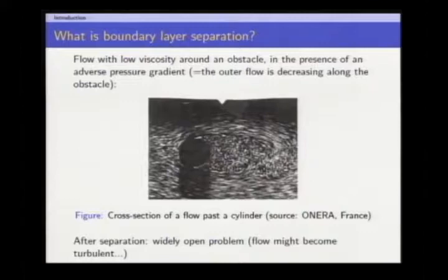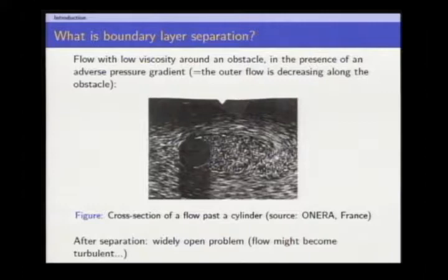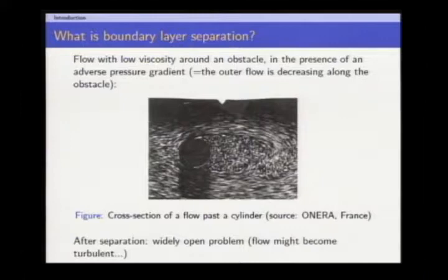This is typically what is called separation. It happens for fluids with low viscosity around an obstacle in the presence of an adverse pressure gradient. I will explain in a few minutes what that is. What happens after the flow has separated itself from the obstacle is a widely open problem from a mathematical point of view. The flow might be turbulent, it might be laminar — we don't really know. What I will be interested in today is what happens for laminar flows right before separation.